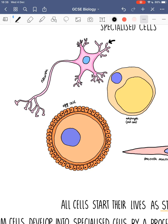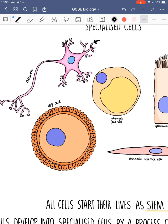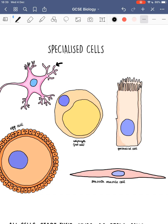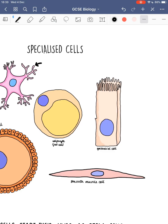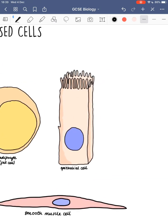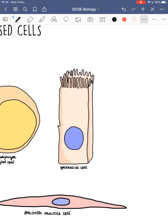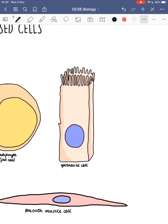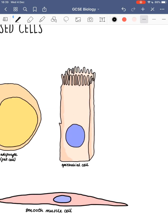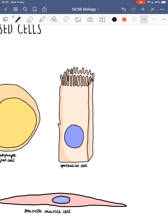Egg cells have loads of space for energy storage and are packed full of mitochondria to provide the energy needed to divide into an embryo. Adipocytes, or fat cells, have less cytoplasm than normal cells, which allows more room to store fats. This epithelial cell — found on the surface of the trachea, or windpipe — has cilia on its surface, these little finger-like projections. That enables them to move mucus containing bacteria and microorganisms, wafting it up our throat to prevent us from becoming ill.